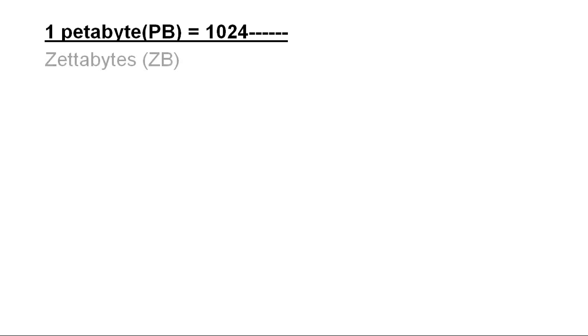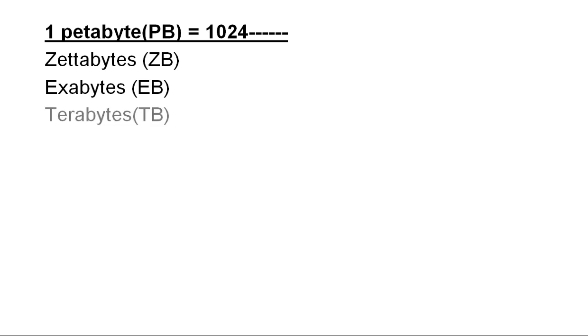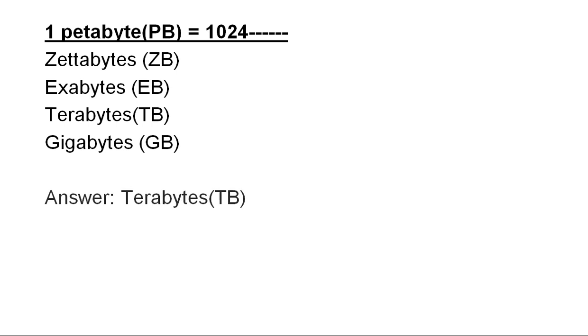One petabyte (PB) is equal to 1024 zettabytes, 1024 exabytes, 1024 terabytes, or 1024 gigabytes. One petabyte is equal to 1024 terabytes.